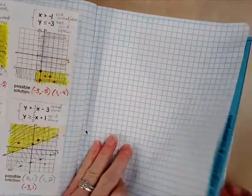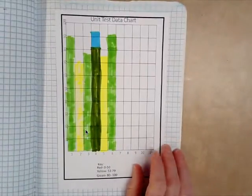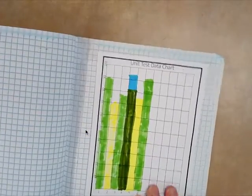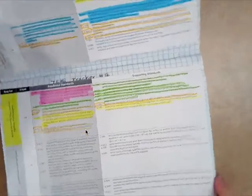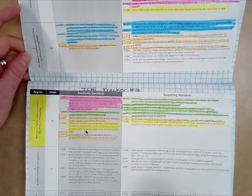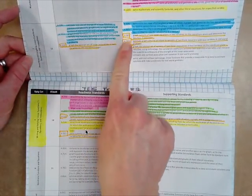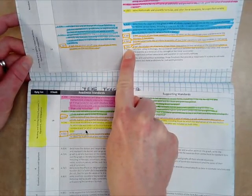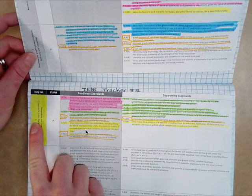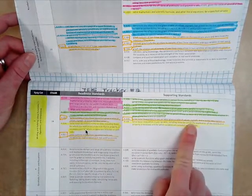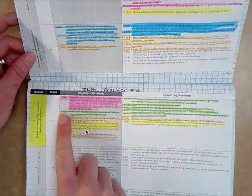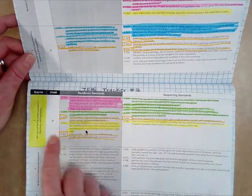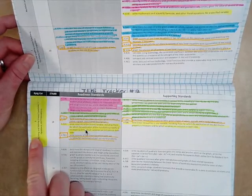Okay, we are starting a new unit, so you will update your TEKS tracker. I mean your unit test data charts with your unit six tests, and you will also update your TEKS tracker. So unit two, we had one skill on the readiness side, three skills on the supporting side, and then reporting category three, we finished everything out, so you're going to do these two on the supporting side, and one on the readiness side. I mean one on the supporting. So we finished all of reporting category three.